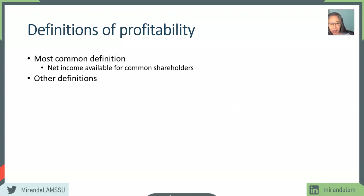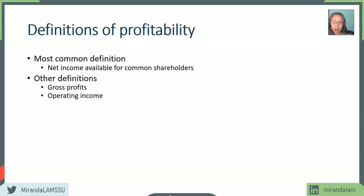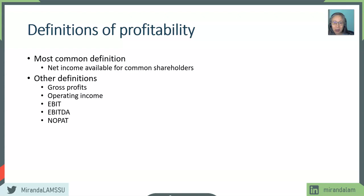In addition to the bottom line — which is net income — we may also want to look at the operational aspect. This includes gross profit, which is just sales minus cost of goods sold. And then also operating income, which measures the income from the regular and recurring operation of the firm. Other terms you may have heard of include EBIT, which stands for earnings before interest and taxes, and EBITDA, which stands for earnings before interest, taxes, depreciation, and amortization.